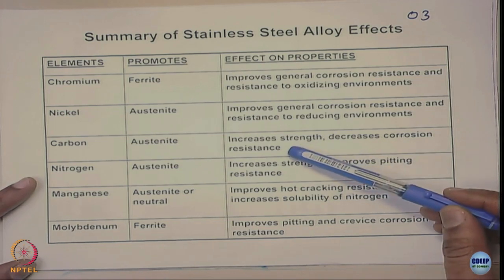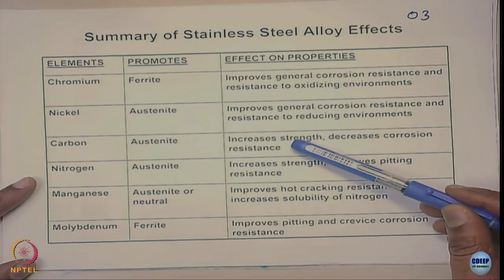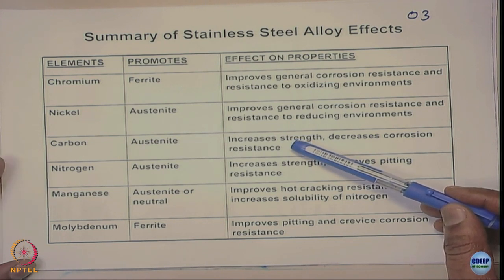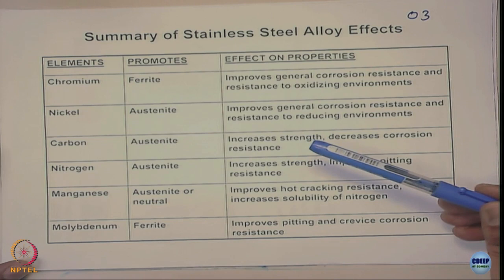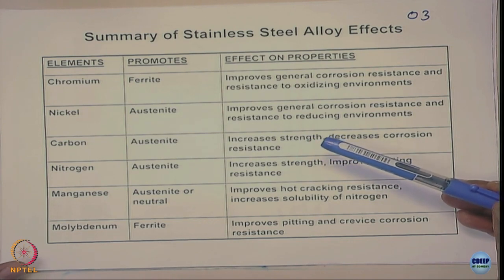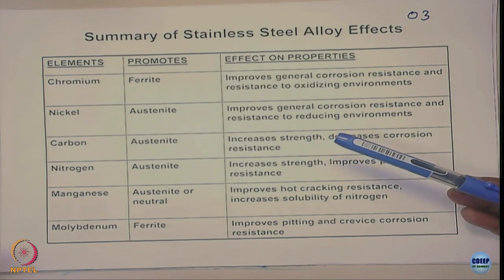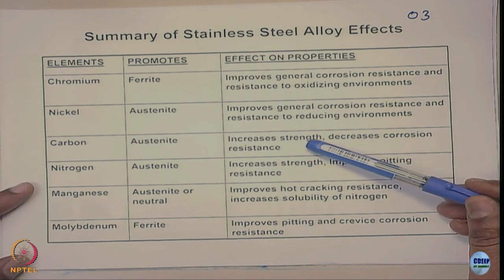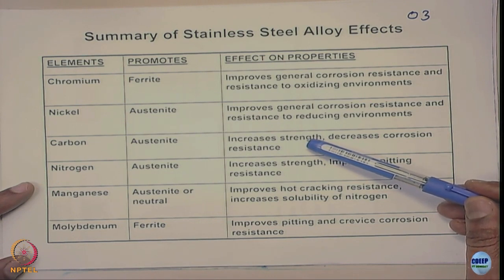If you lower the carbon content and thus lower the strength, the cost of the reactor goes up — a thicker component is needed for a pressure vessel, which increases cost. So carbon is a problem, but we cannot ignore its beneficial effect. Nitrogen-containing stainless steels increase strength, improve pitting resistance, and to some extent improve weld decay resistance.